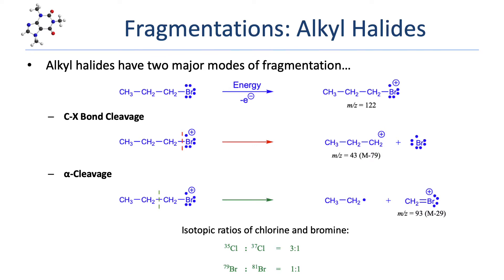Alkyl halides have two major modes of fragmentation. The first is CX bond cleavage — the carbon-to-halogen bond simply cleaves. This is another big difference between fragmentations on alkanes versus a functional group like an alkyl halide. When a carbon-carbon bond in an alkane cleaved, it could fragment in either of two directions — the electron could end up on one carbon or the other. When the carbon-halogen bond in an alkyl halide cleaves, the electron prefers to go with the more electronegative halogen, so there's only one fragmentation for that bond.